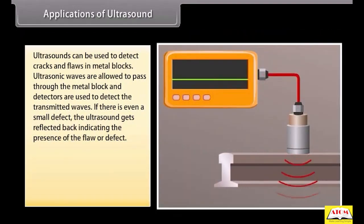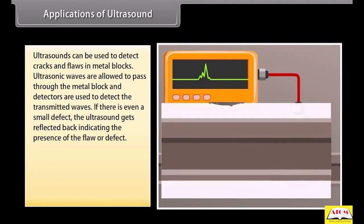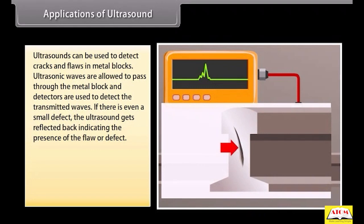Ultrasounds can be used to detect cracks and flaws in metal blocks. Ultrasonic waves are allowed to pass through the metal block and detectors are used to detect the transmitted waves. If there is even a small defect, the ultrasound gets reflected back, indicating the presence of the flaw or defect.